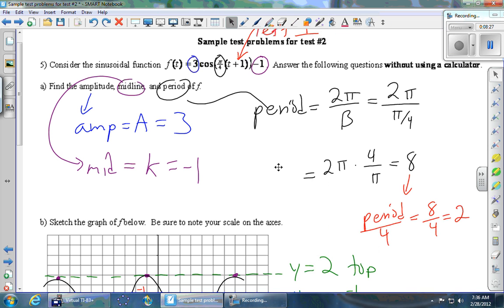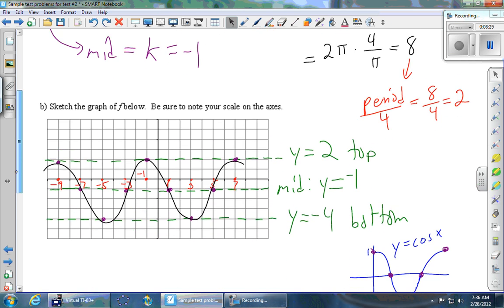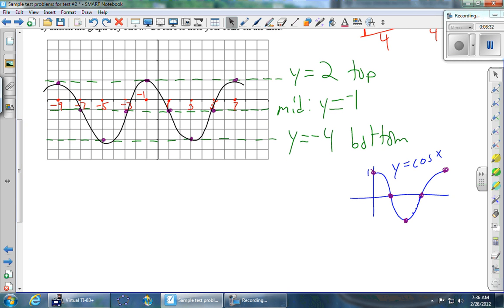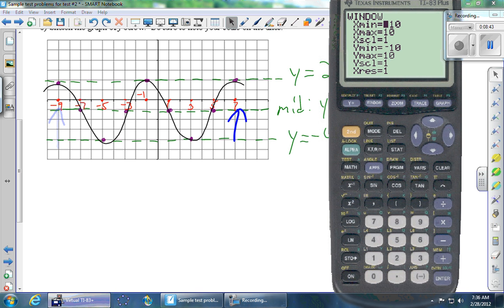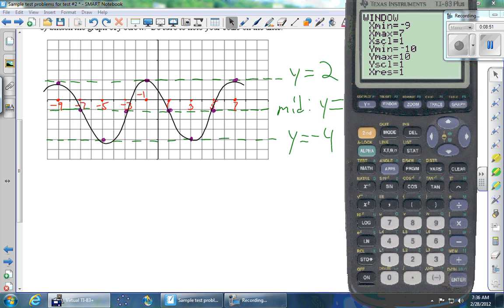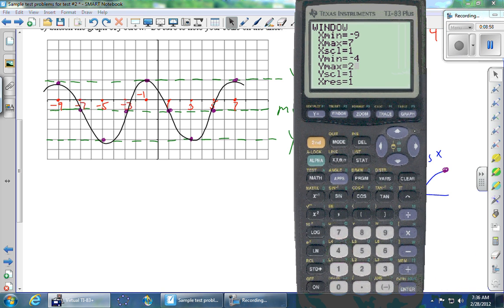And then the window. Let's go ahead and pick a window that matches the graph that we drew. So the far left of my, the leftmost point that I drew here was at negative 9. And the rightmost point was at 7. So let's pick those for the x min and x max. So we're going to go negative 9 to 7. And going by 1s is fine. And then the y min, the bottom of my band here was at negative 4. And the top was at 2. And we're going to go by 1s again. And so if we've done this correctly, we should get exactly the graph that we see here. Two complete periods starting at the top and ending at the top.